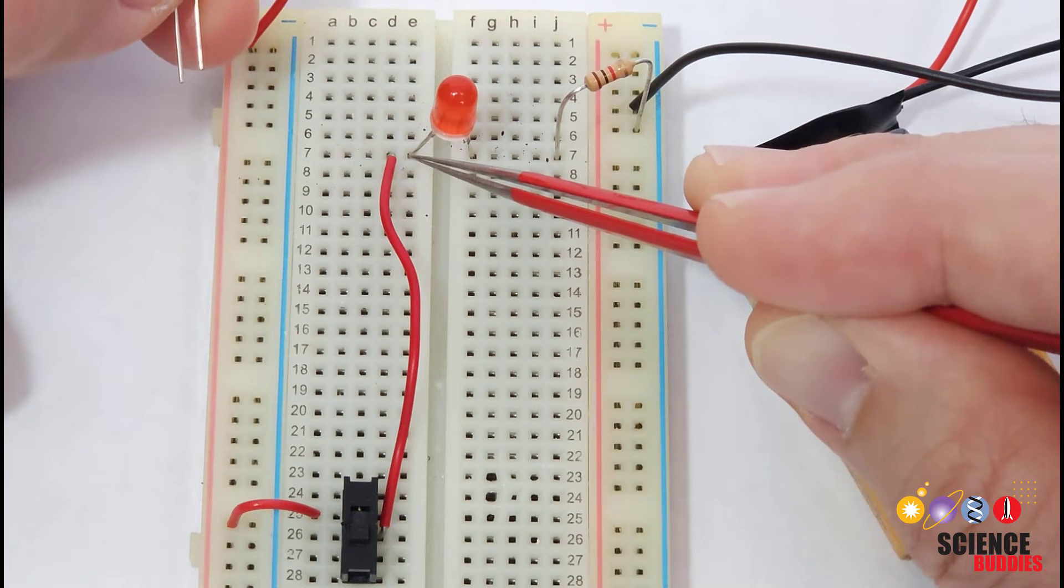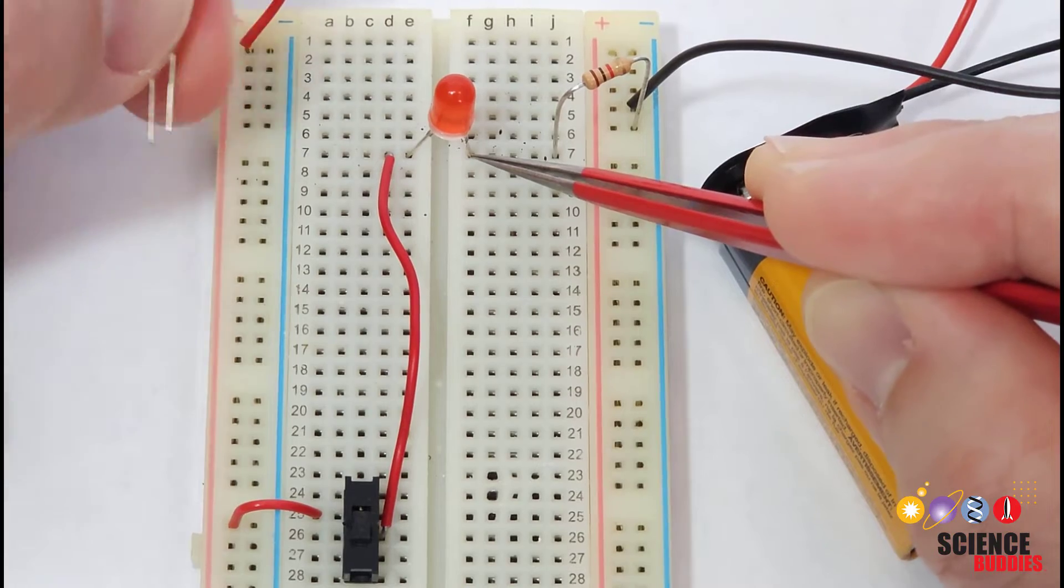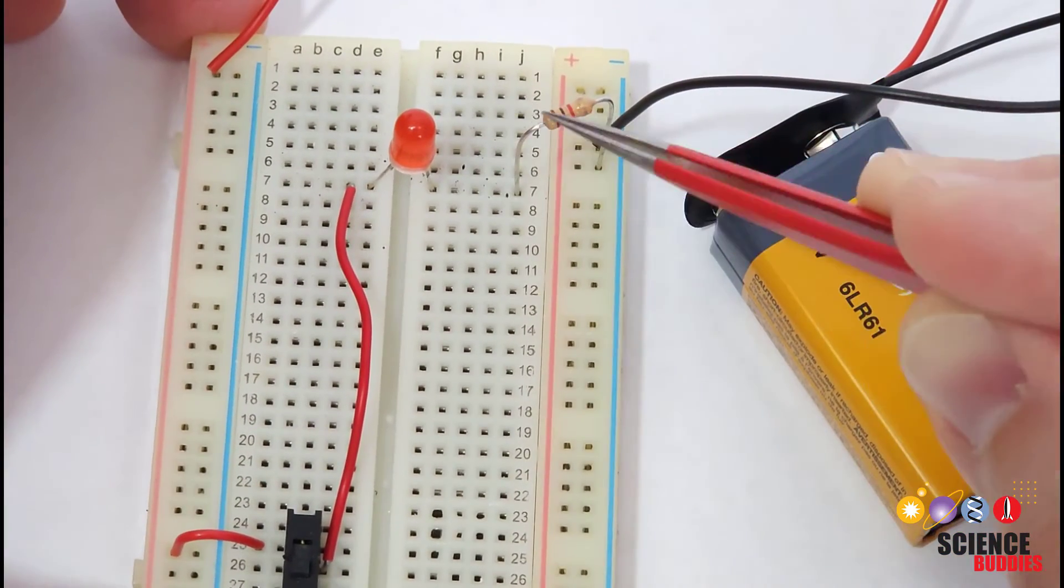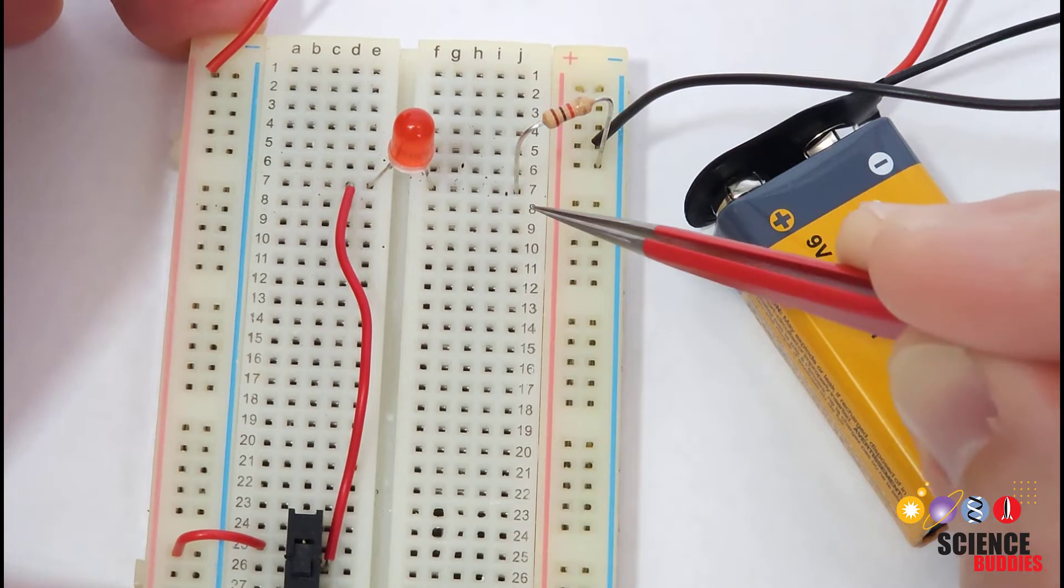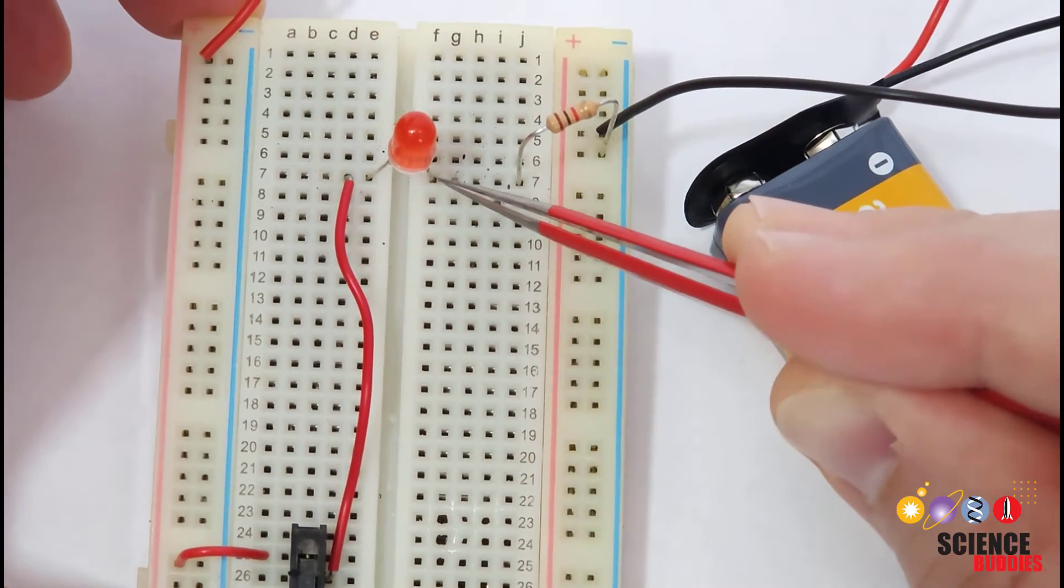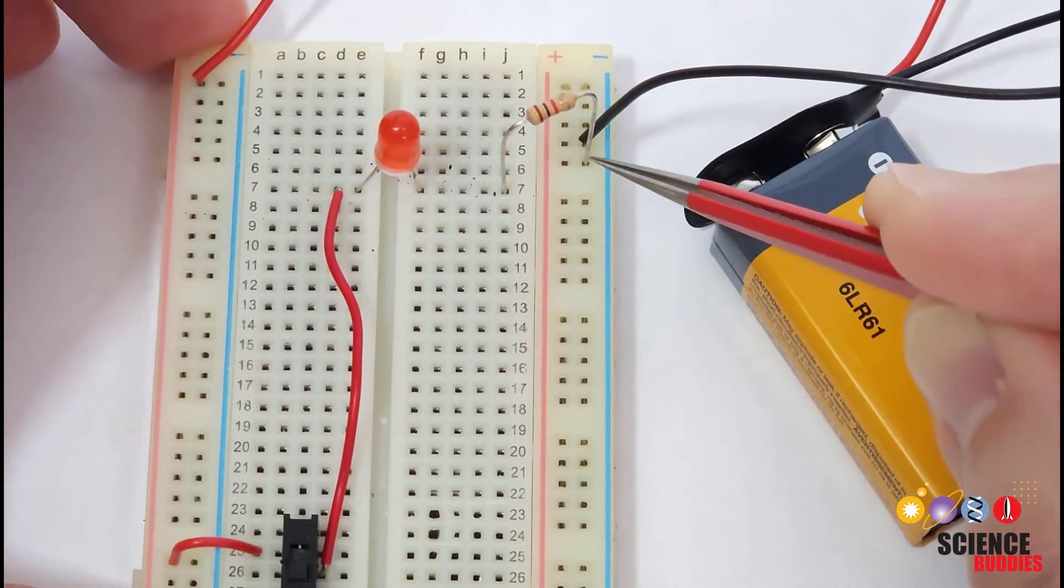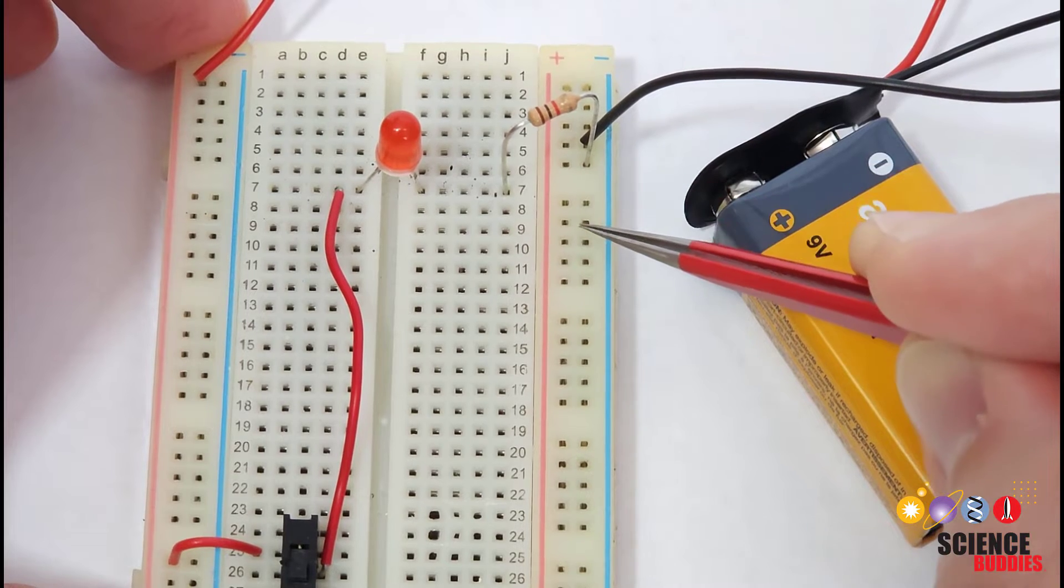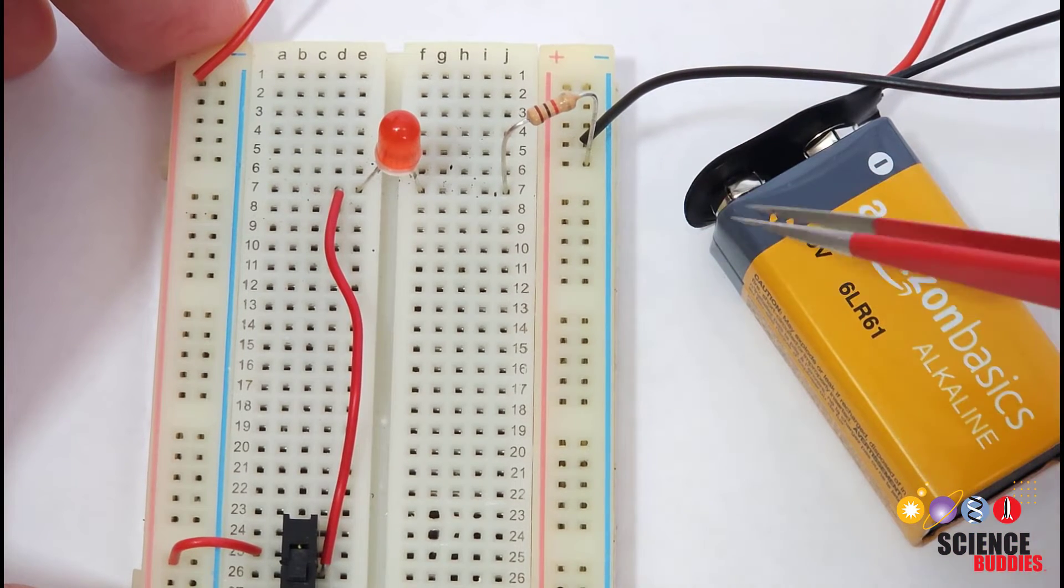So I have the longer LED leg here, the shorter LED leg over here, and then the LED is in series with the current limiting resistor. So one leg of the resistor goes in the same row as the LED and the other leg of the resistor goes in the ground bus, completing the circuit.